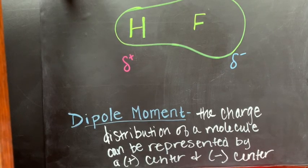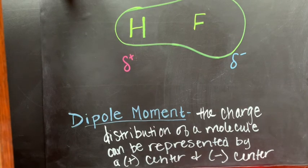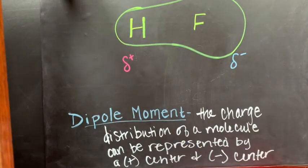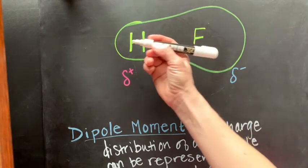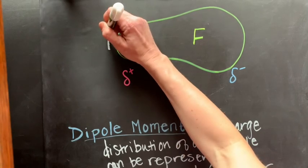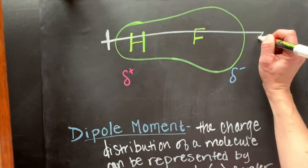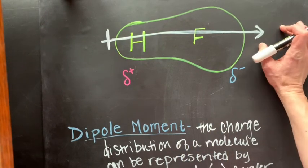What happens with polar covalent bonds is you have an occurrence called a dipole moment — the charge distribution of a molecule can be represented by a positive center and a negative center. In hydrogen fluoride, hydrogen has a partial positive charge and fluorine has a partial negative charge. This allows us to draw a dipole moment where the center of positive charge is at hydrogen and the center of negative charge is at fluorine.